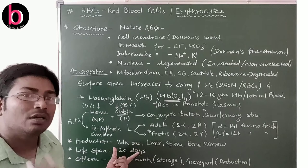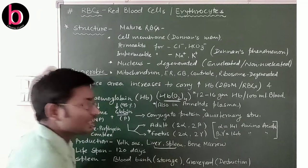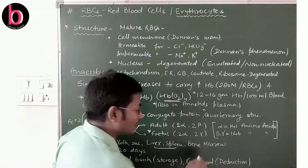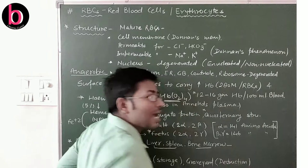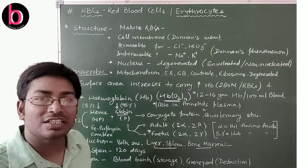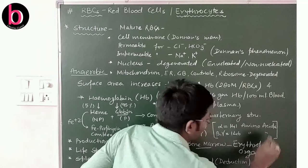RBC production occurs in different organs at different life stages. In the very early embryonic stage, the yolk sac — one of the four extra-embryonic membranes (amnion, chorion, allantois, yolk sac) — is responsible for RBC production. In the post-embryonic stage, the liver and spleen produce RBCs. After birth, the bone marrow of longer bones is responsible for RBC production. The synthesis of RBCs is called erythropoiesis, and these organs are known as erythropoietic organs.